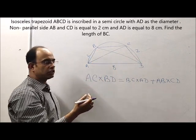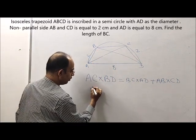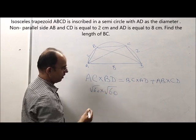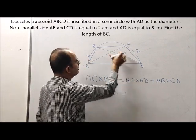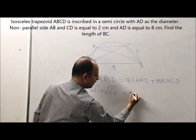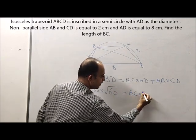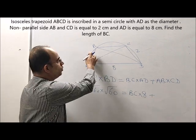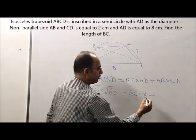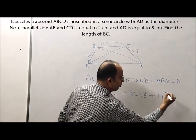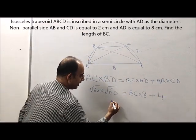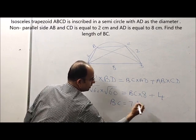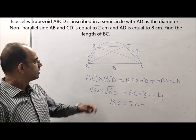BD is also root 60 because it's an isosceles trapezium. Root 60 into root 60 is equal to BC, we need to find the value. AD is 8 plus AB is 2 and CD is 2. 2 into 2 is 4. Now solving this, we get BC is equal to 7 centimeters.